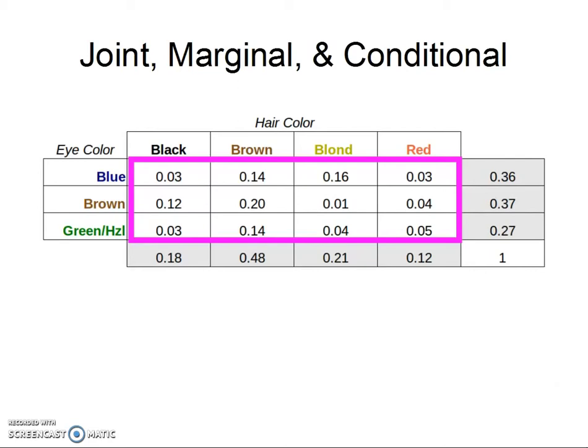So first, what this table is showing: we have eye color represented by rows and hair color along the columns. In the pink box that just popped up, each of those cells represents the probability of having, say, brown hair and blue eyes. Out of the whole population, the probability of having brown hair and blue eyes is 14%. These are called joint probabilities.